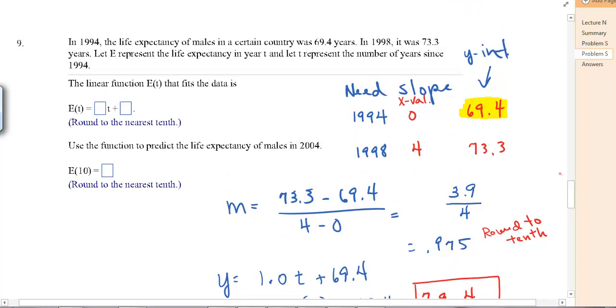In 1994, the life expectancy of males in a certain country was 69.4. In 1998, it was 73.3. E represents the life expectancy in year T, and let T represent the number of years since 1994. Since 1994 is important. So we need to figure out the slope, and we're given essentially two points. 1994 was 69.4, and 1998 it was 73.3. The x value is the years, because T is letting it be the years, and we're calling that the same as our x value. So it says after 1994. So we let 1994 be 0. And then from 94 to 98 is 4. So we have 0, 69.4, 4, 73.3. Those are our two points.